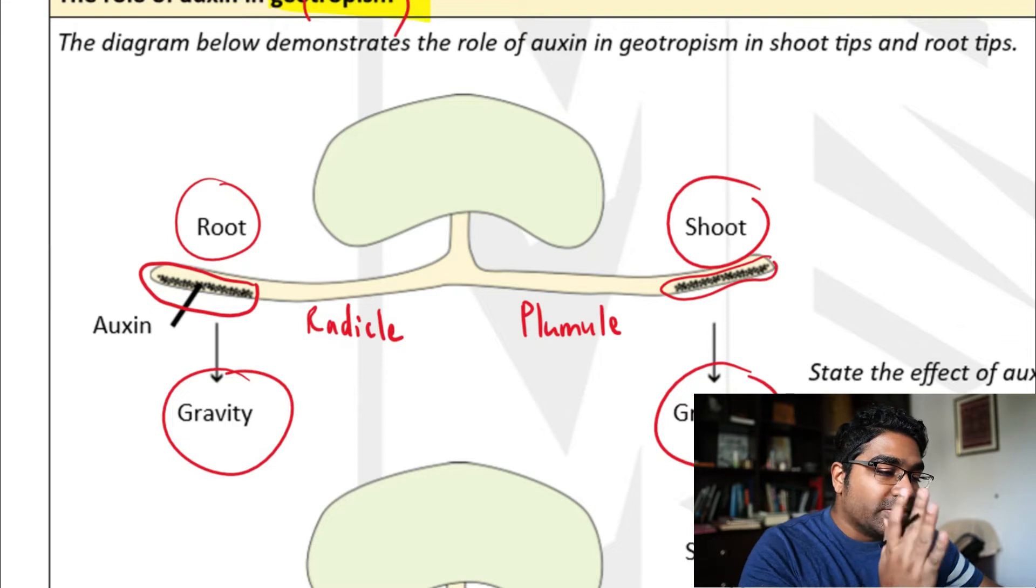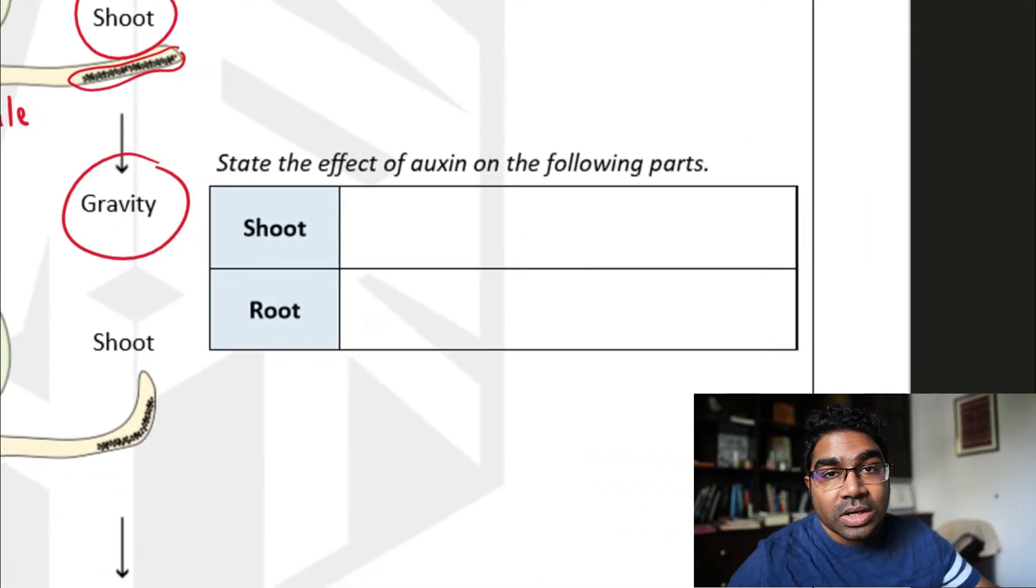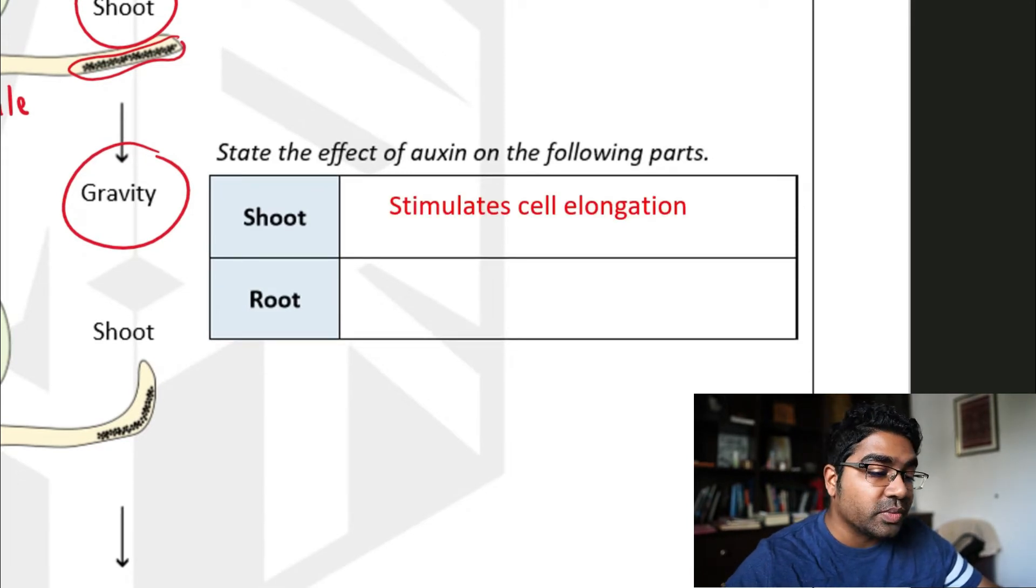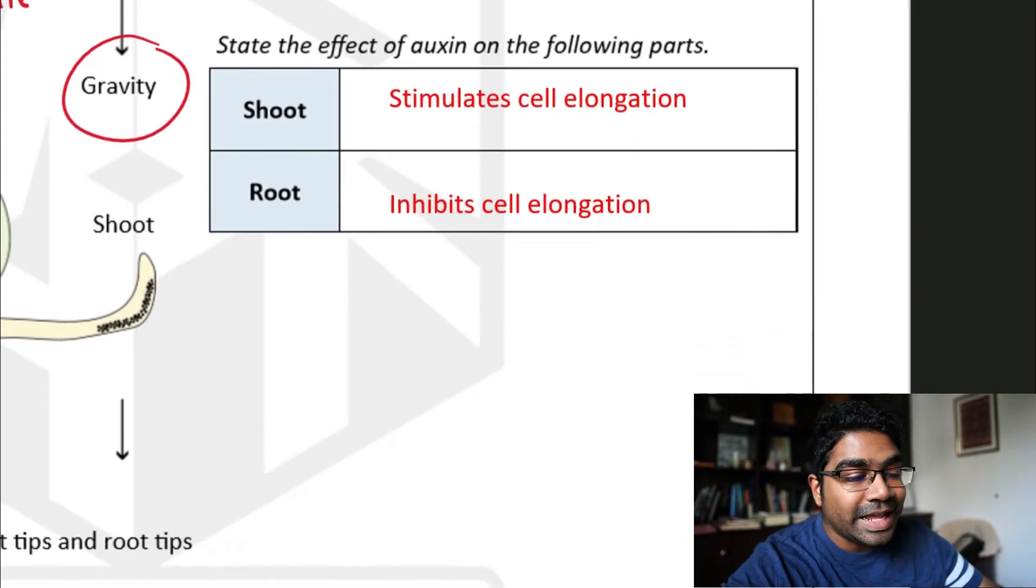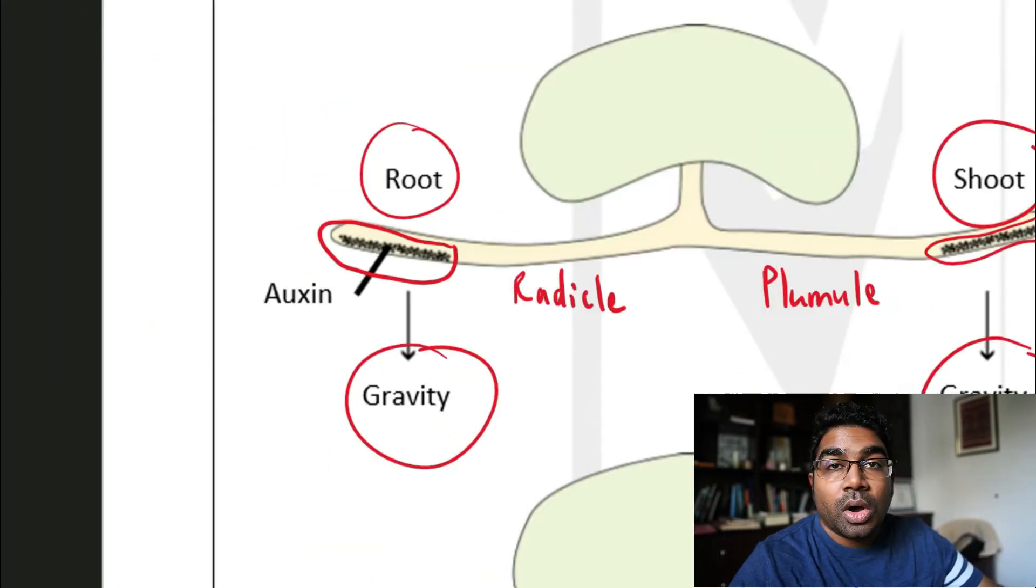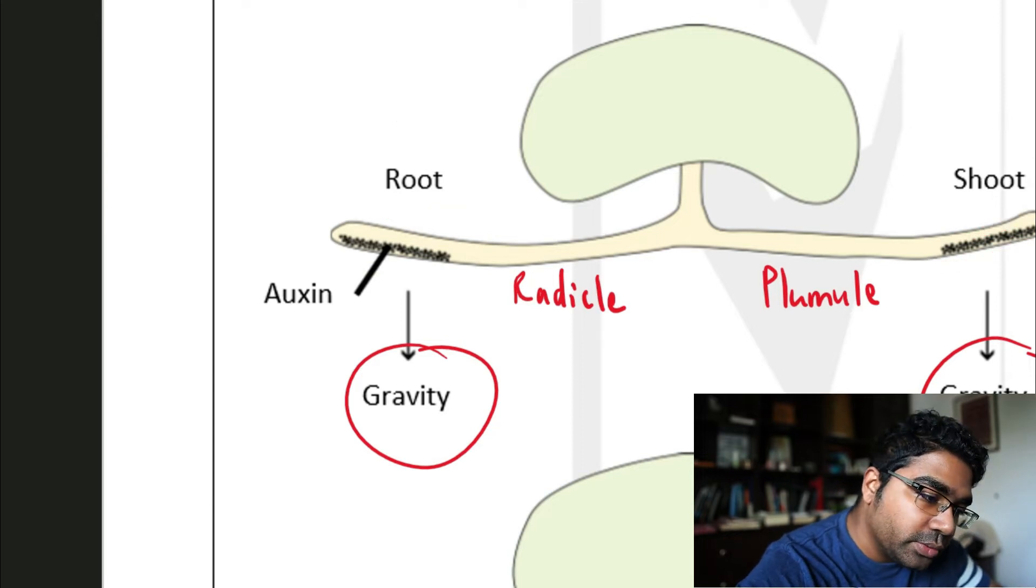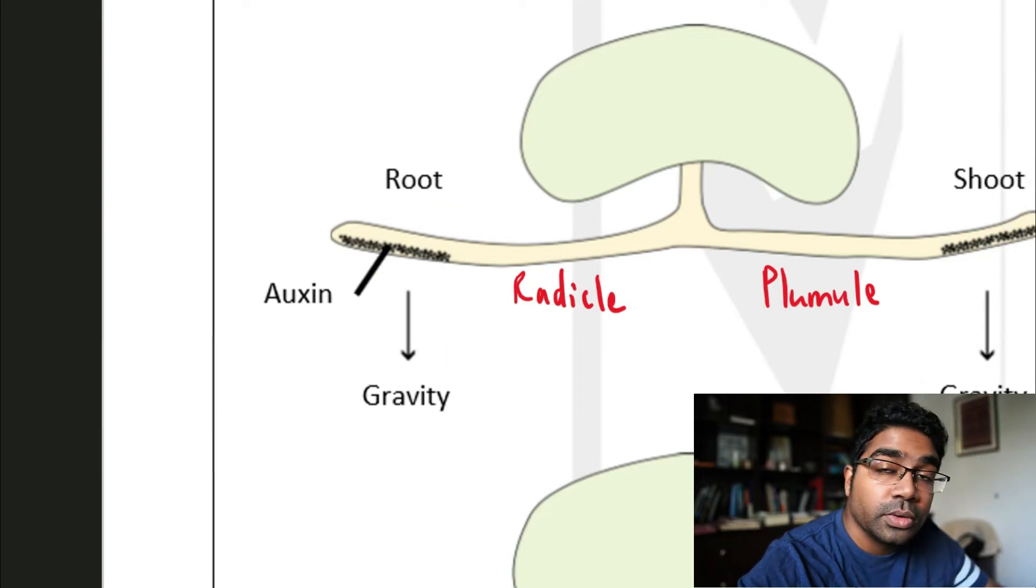effect in the root as well as the shoot. In the shoot, auxin stimulates cell elongation, whereas in the root, auxin inhibits cell elongation. Let's see the effect of that in this plant. Auxin gathers on the bottom part of both the shoot and root; however, due to its different effects, the direction of growth will be different.